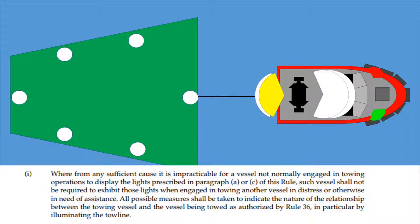Rule 36 simply says that it is okay to use other lights or signals to attract attention as necessary, so long as they cannot be confused with other lights in the rules.